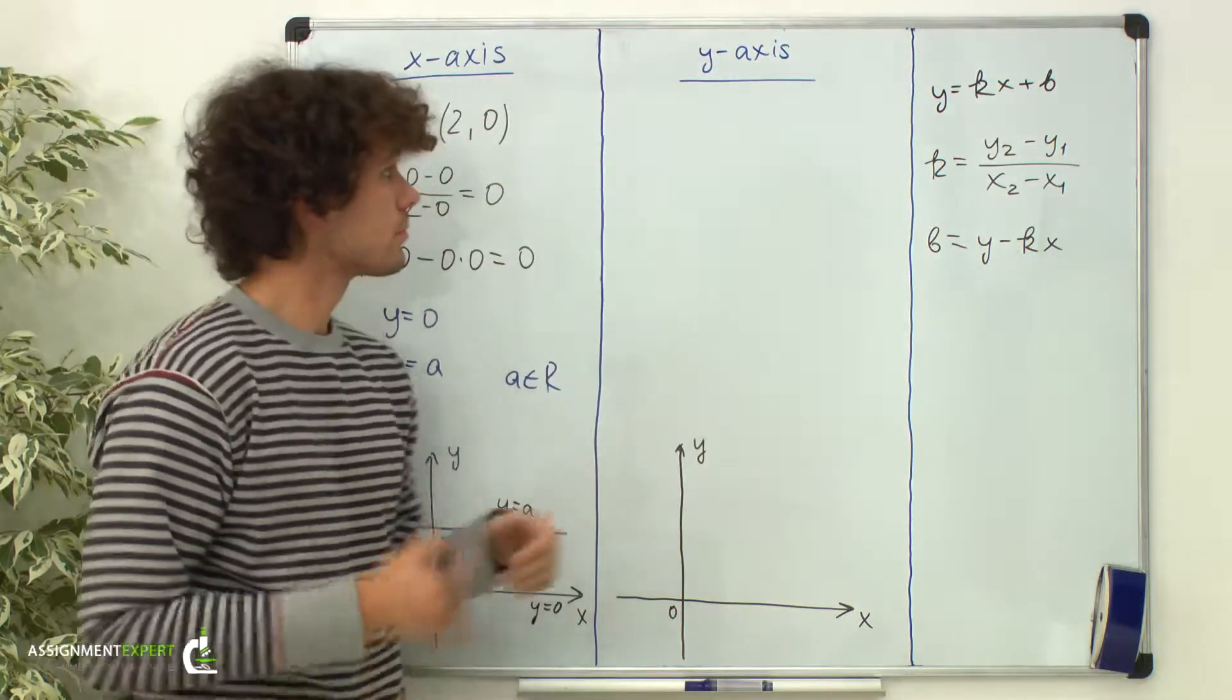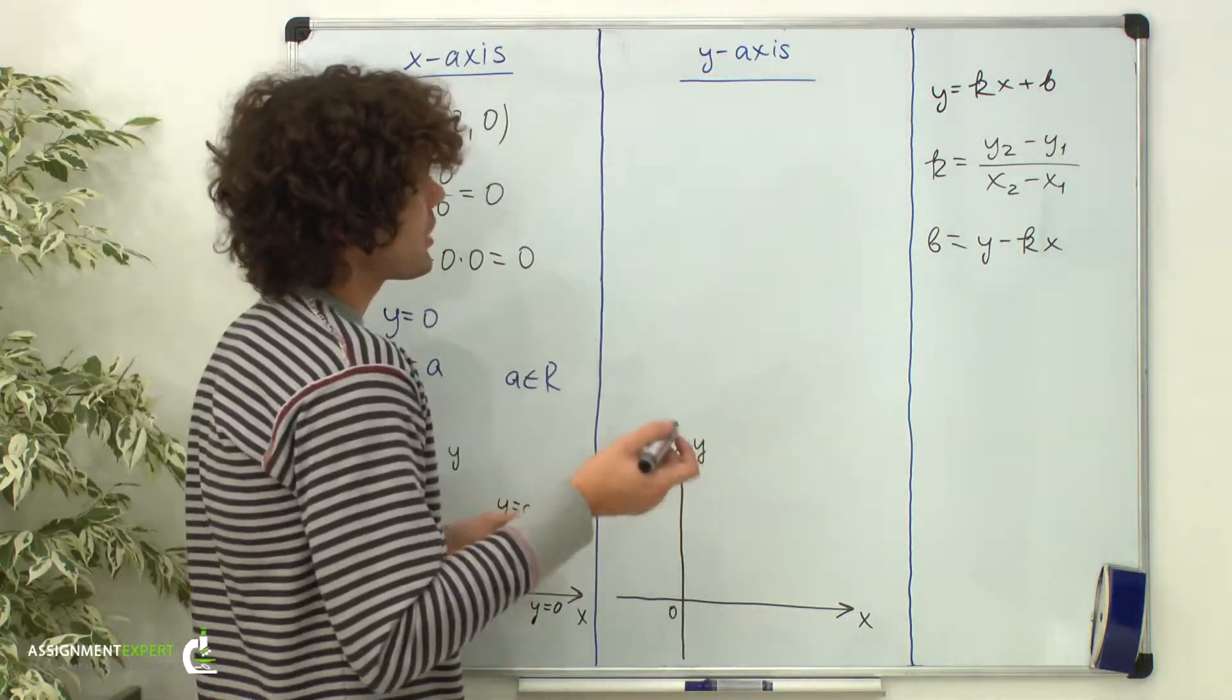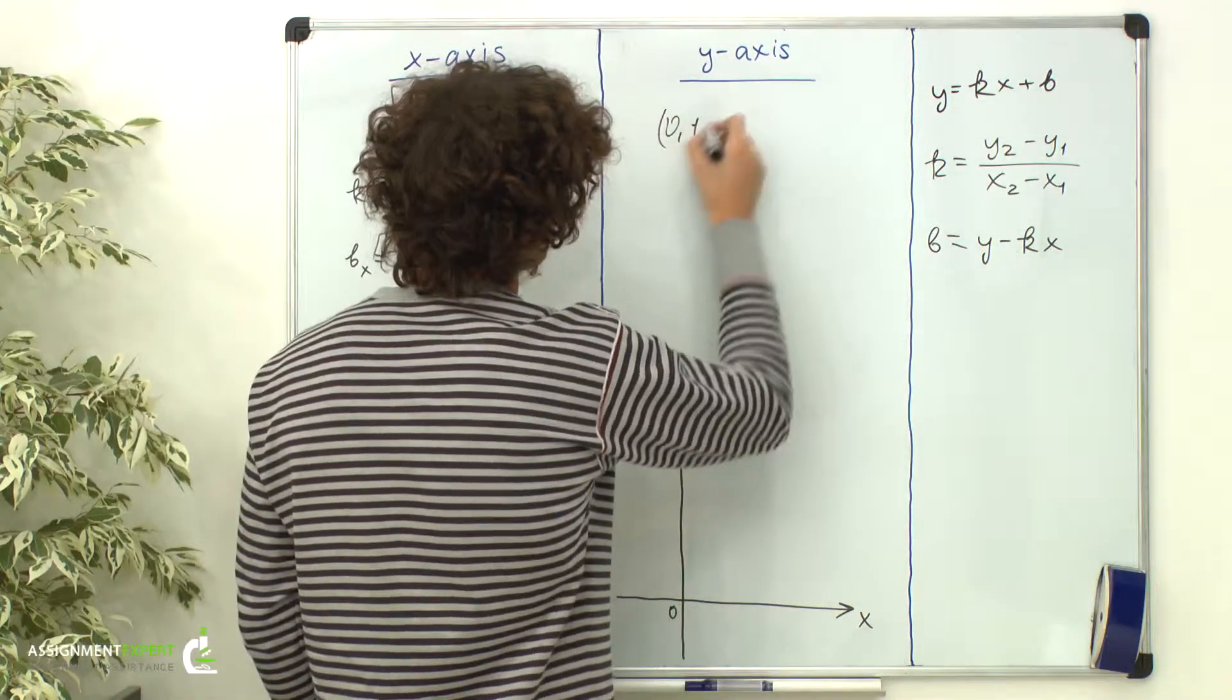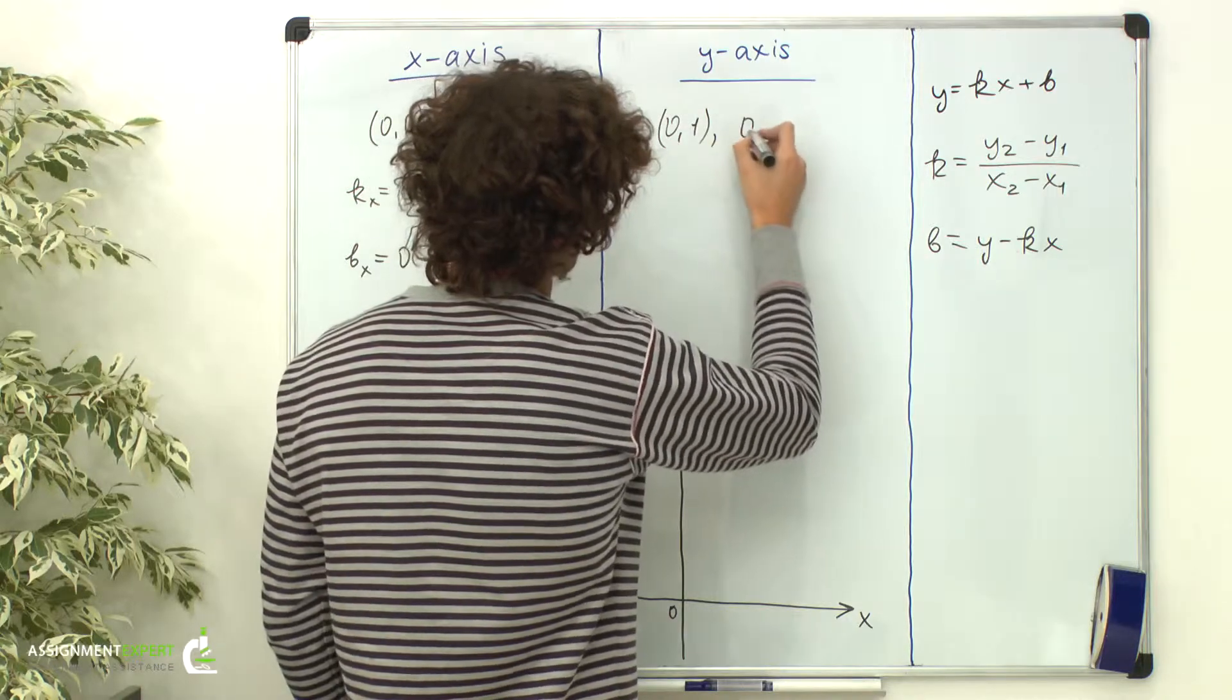Now the y-axis. We once again need to have two points. Let's pick the point (0,1) and the point (0,4).